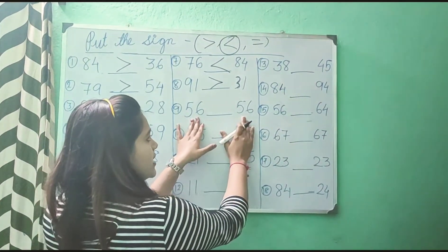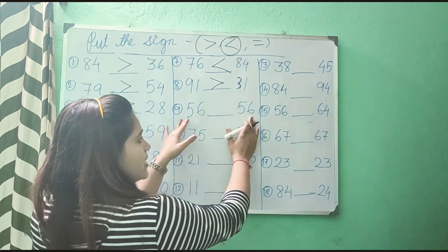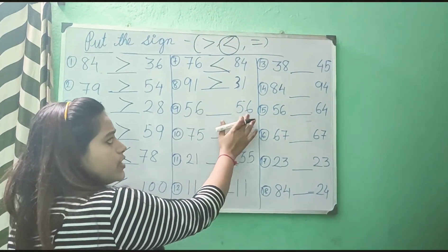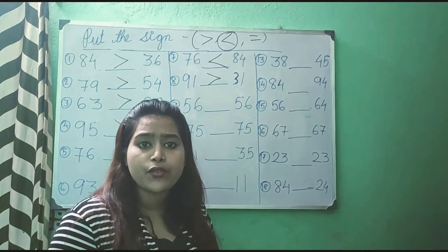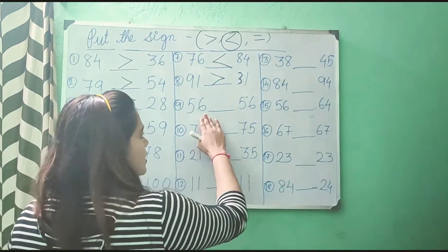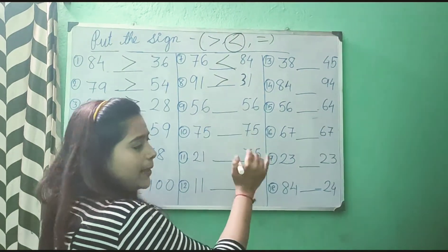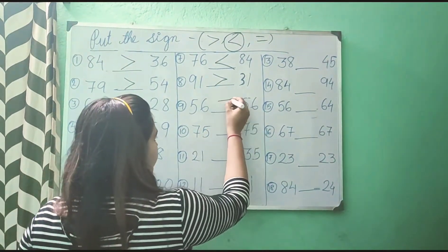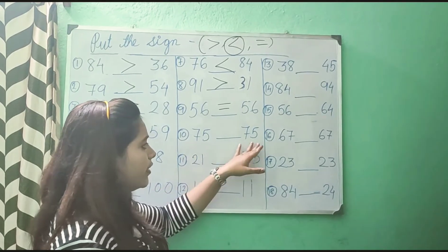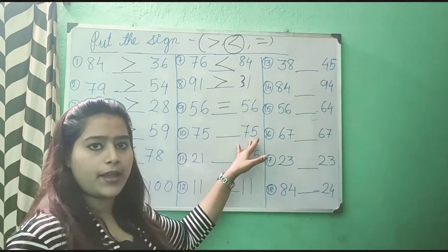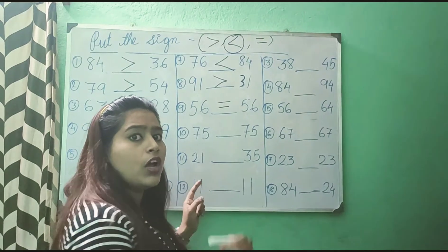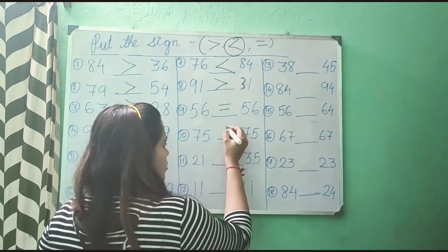Now, 56 and 56 — these both numbers are same. So which sign will we put? We will put equals to as these both numbers are same. This is the equal to sign. Now, 75 and 75 — again, these two numbers are same, so we will put equals to.